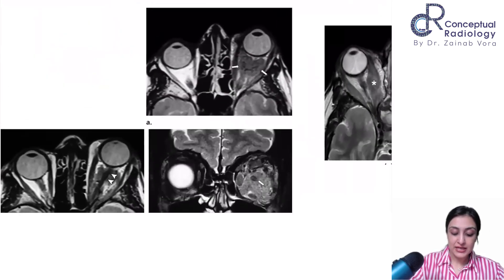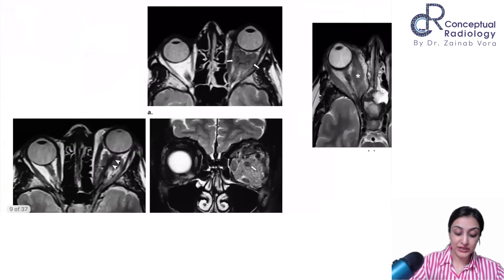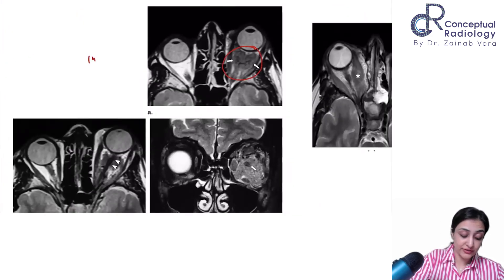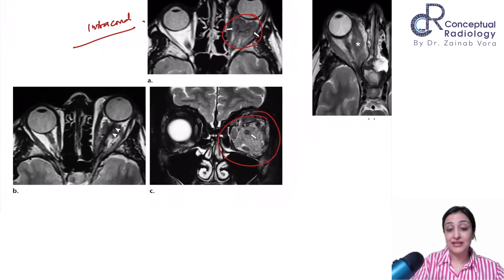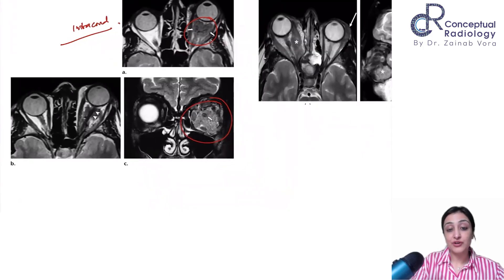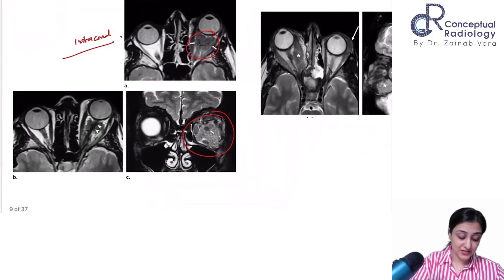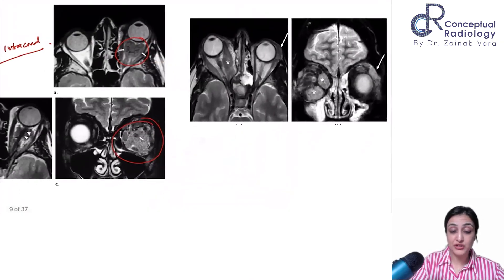Another case: T2 hypointense infiltrative intraconal pseudotumor encasing the optic nerve — hypointense on all sequences. This is a very infiltrative mass lesion. This is how pseudotumor can present, with resultant axial proptosis in this patient.